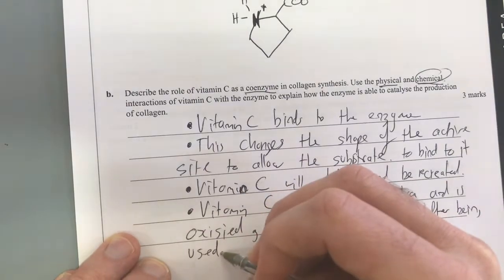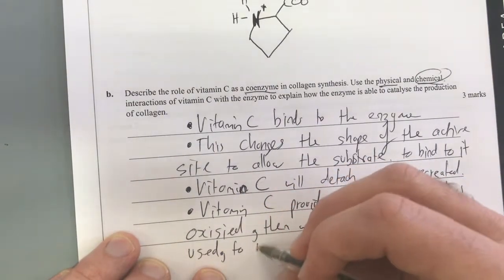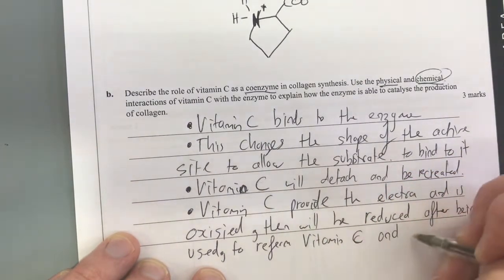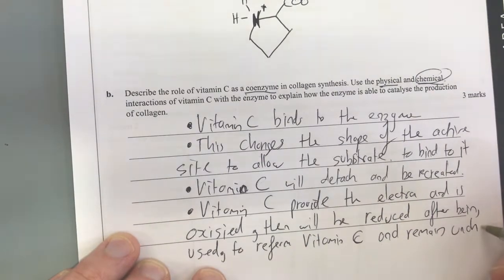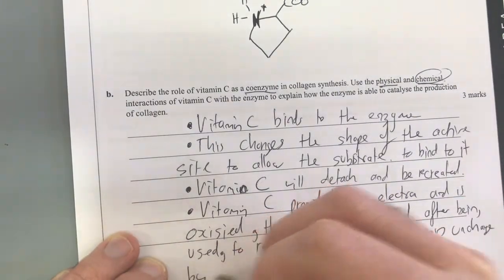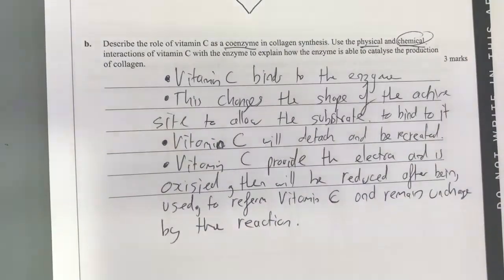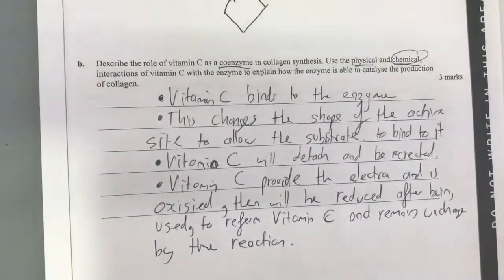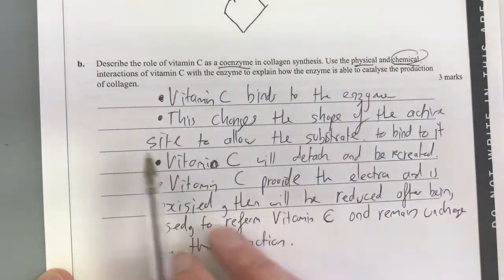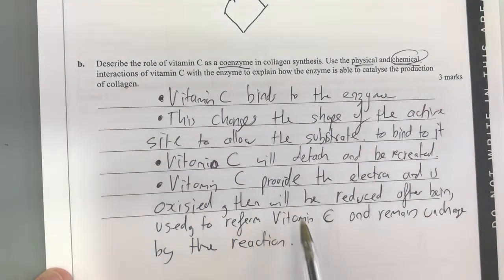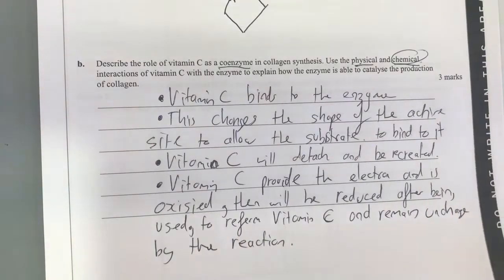This is not really well worded, but: to reform vitamin C and remain unchanged by the reaction. Coenzymes can't be used up — so while vitamin C binds to the enzyme, it then detaches and remains unchanged. If it donated the electron to begin with, it had to receive the electron before the reaction finished. That's how vitamin C works as a coenzyme.